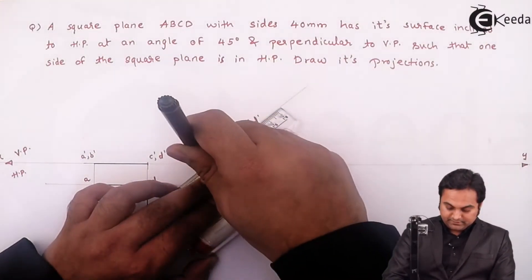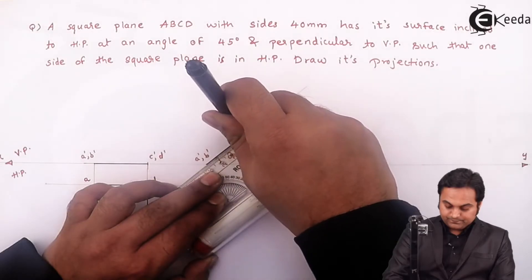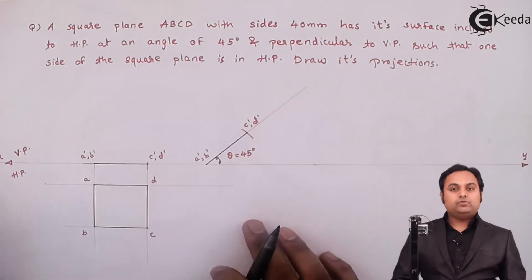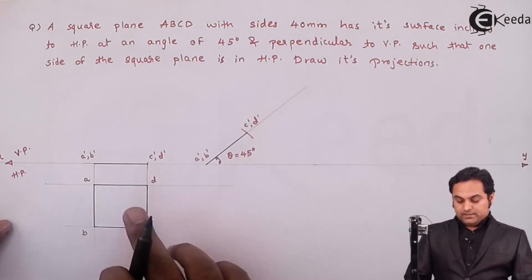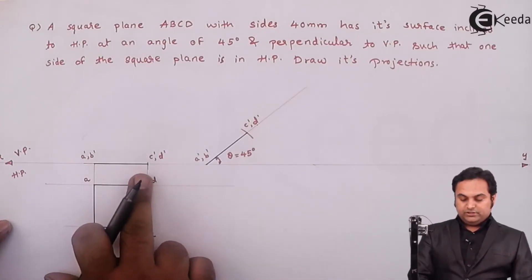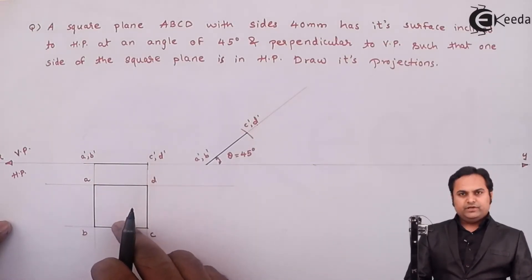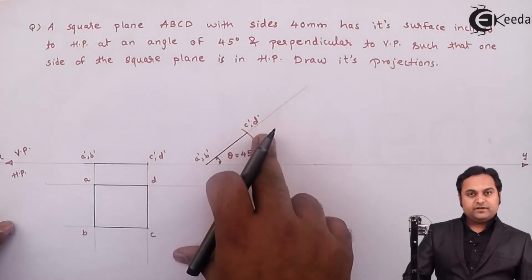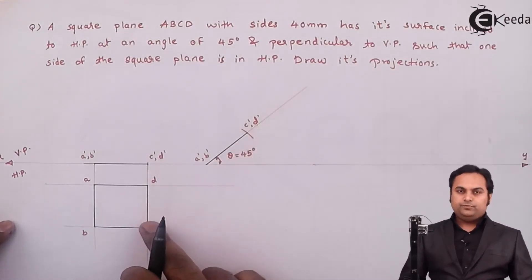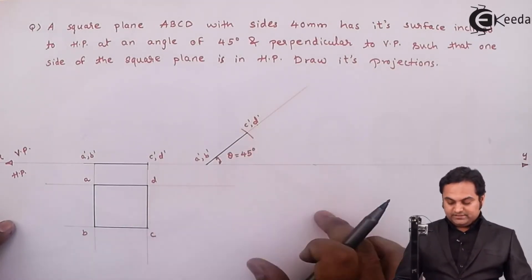This is the front view of the inclined plane. Now I have to draw the top view because when this line was horizontal it was appearing as a square; now since this line has become inclined, the shape won't remain square. So the next shape which I am going to get will be called the apparent shape.